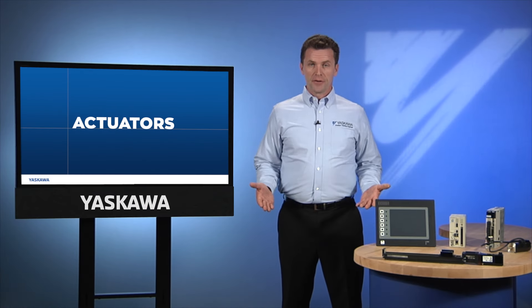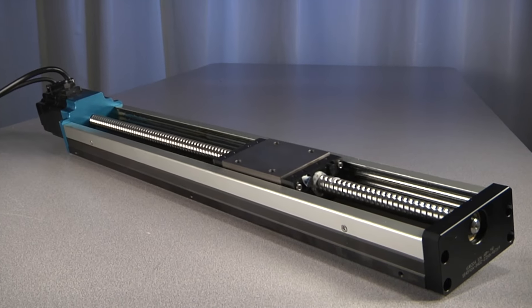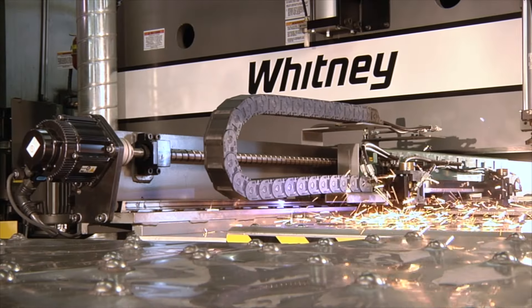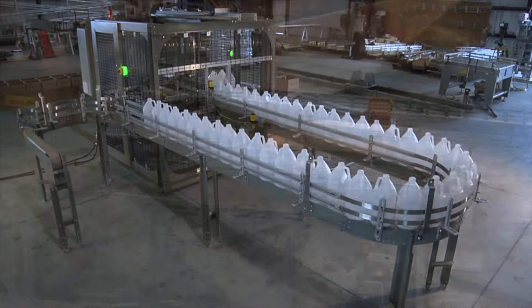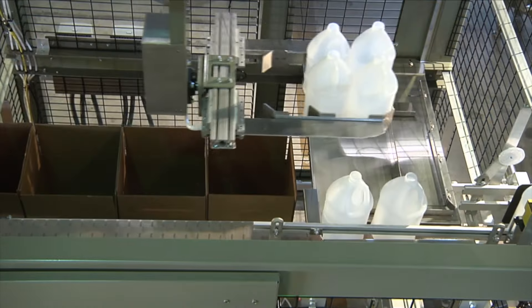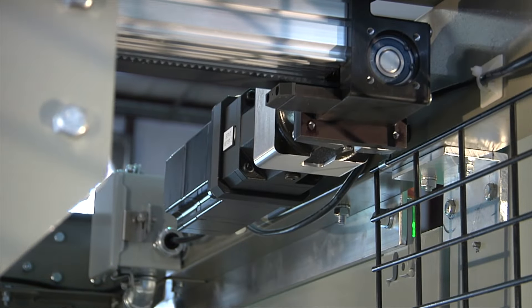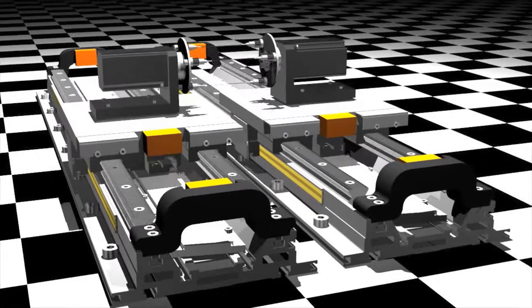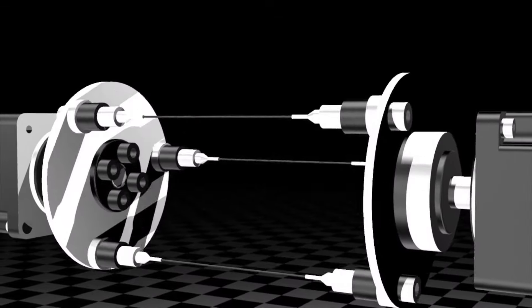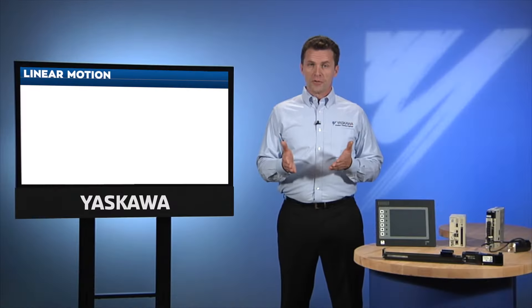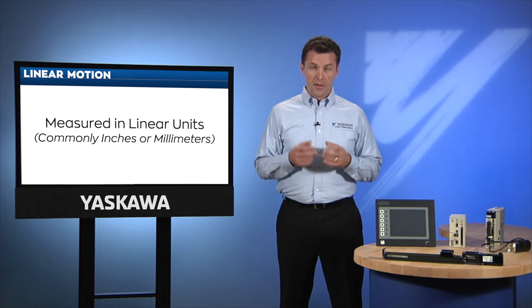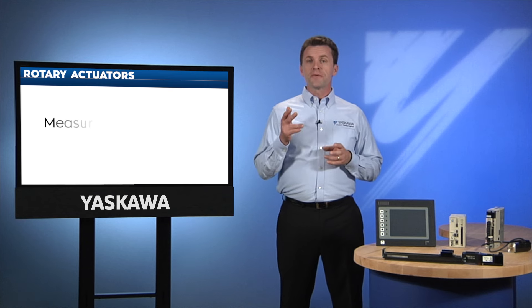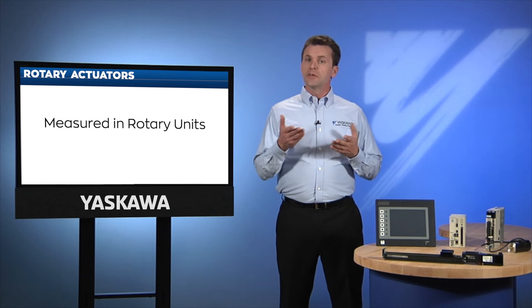Up to now, in our discussion of components, we have focused on linear actuators. They are common and also the easiest to understand. But there are many other types of mechanisms used in industrial automation. We can put the whole range of mechanisms in two categories: those producing linear motion and those producing rotary motion. For linear motion, the movement is defined in linear units, commonly inches or millimeters. A rotary actuator defines movement in rotary units, usually degrees.